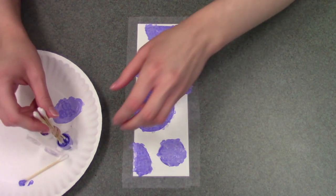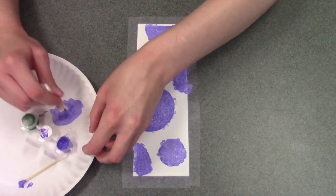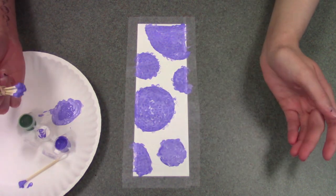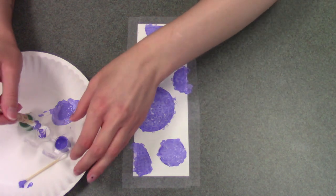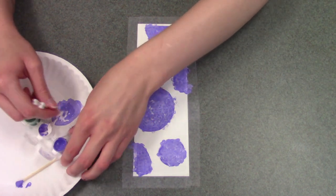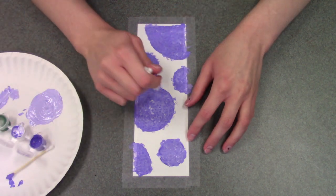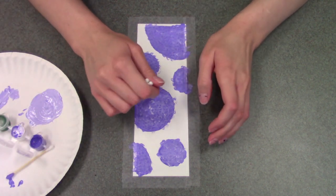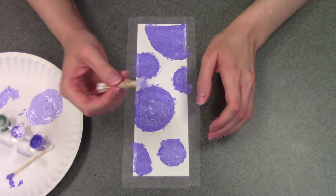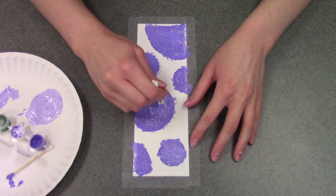And then once you successfully made your first round of lighter purple, you're just basically going to continue that process of taking more purple and some more white and adding more white every single time to kind of get a lighter shade of purple every single time you do it. So then you're just going to continue dabbing a new circle with the lighter paint every time and just kind of make the circle smaller.